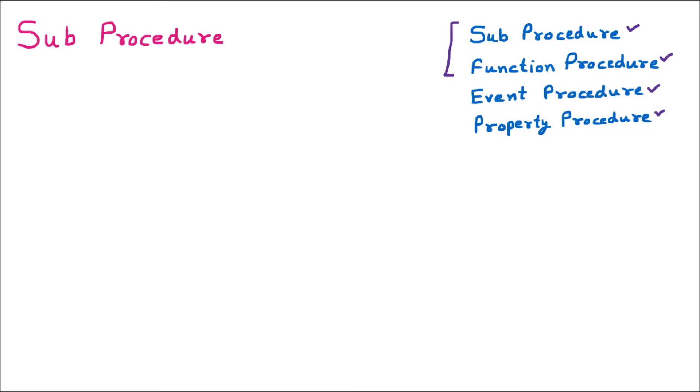Now we are talking about the sub procedure. We should understand that the sub procedure is a procedure that has nothing to return. In short, if we say 'procedure' that means sub procedure, and 'function' means function procedure. If somebody says procedure, we understand it is the sub procedure; if somebody says function, we understand it is the function procedure.